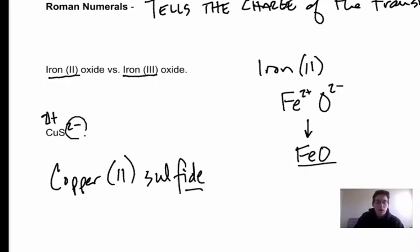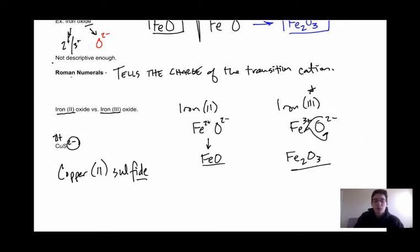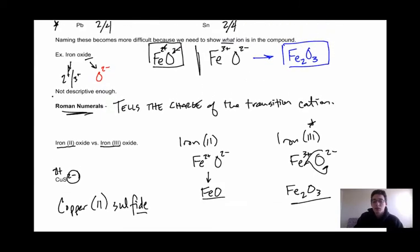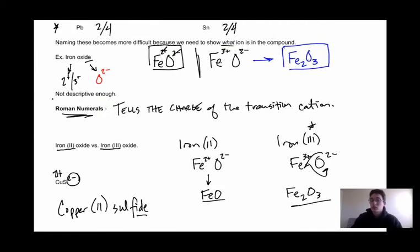So again, there will be more practice. The roman numerals are the biggest thing you need to remember when it comes to transition metals, because if you don't include a roman numeral it's wrong. We need to make sure we're using the proper procedures when we're naming binary compounds that include transition metals.